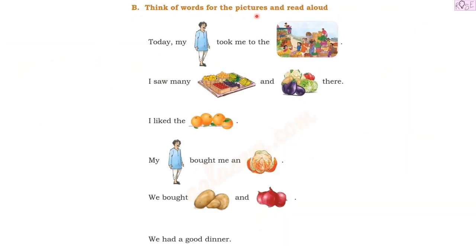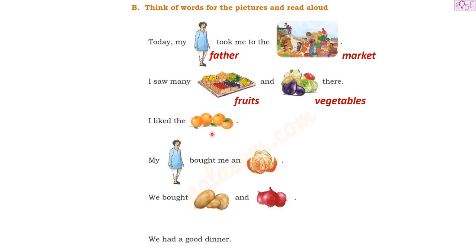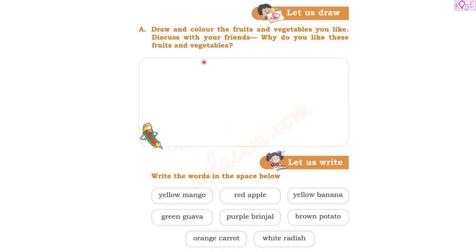Now think of words for the pictures and read aloud. 'Today my father took me to the market. I saw many fruits and vegetables there. I like the oranges. My father bought me an orange. We bought potatoes and onions. We had a good dinner.' Now this part you have to do yourself.